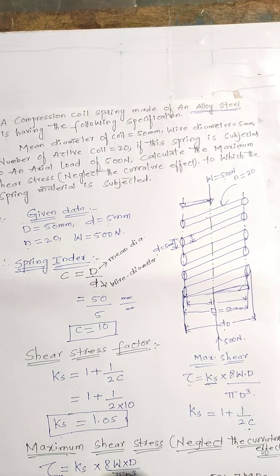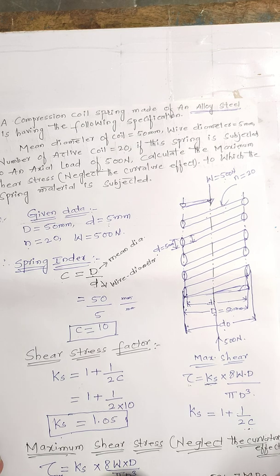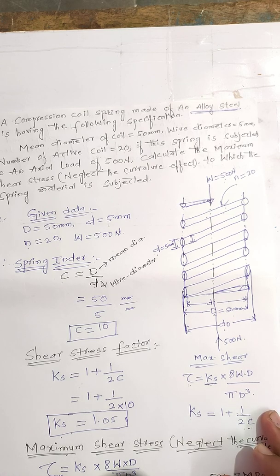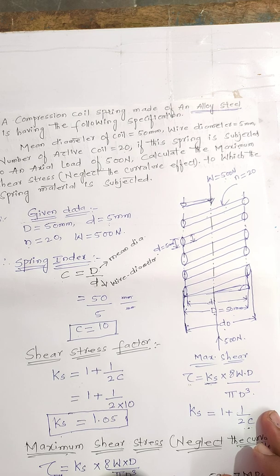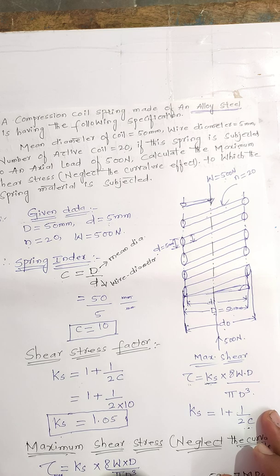The maximum shear stress value we get is 534.7 MPa. I hope you understood the concept for the first problem. We will learn the second problem in the next session. If you have any doubts, please write in the comment box and don't forget to subscribe to my channel. Thank you.